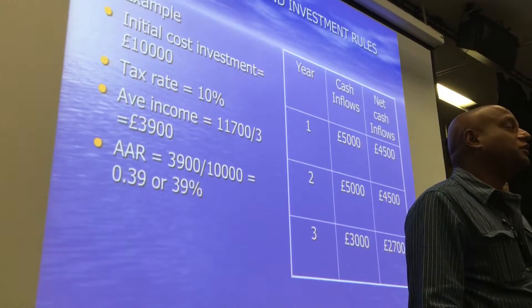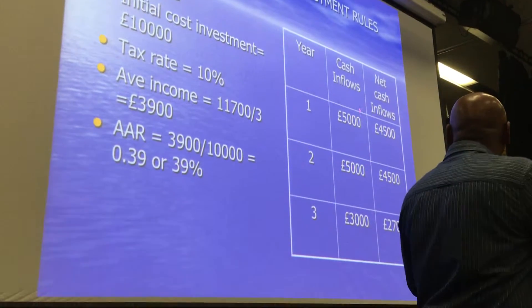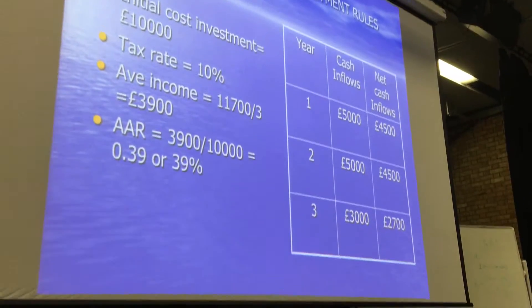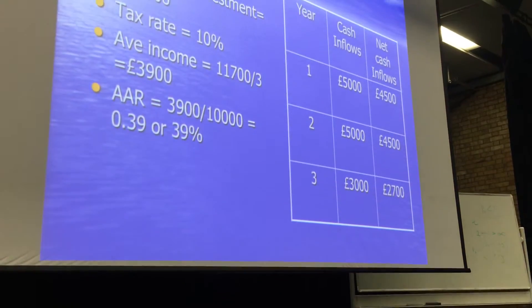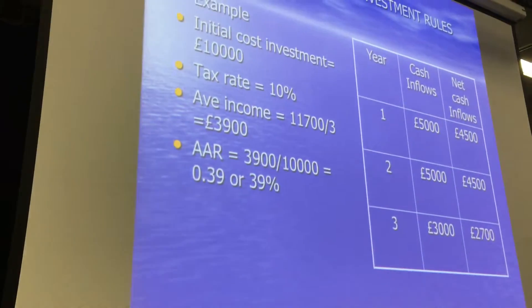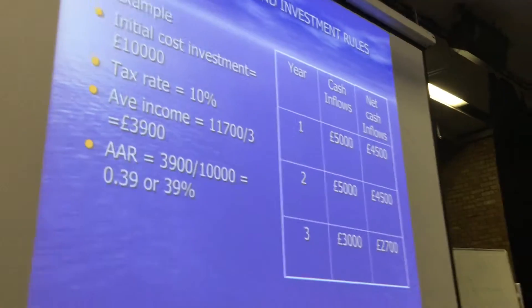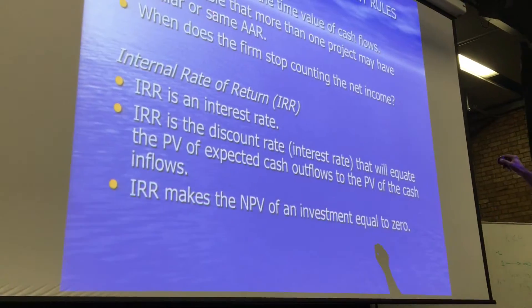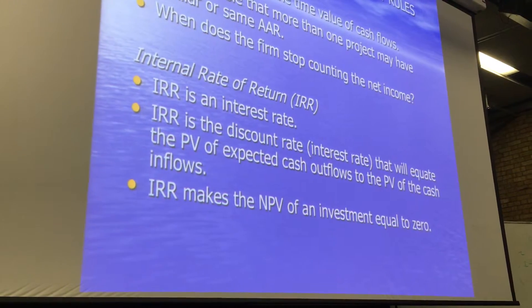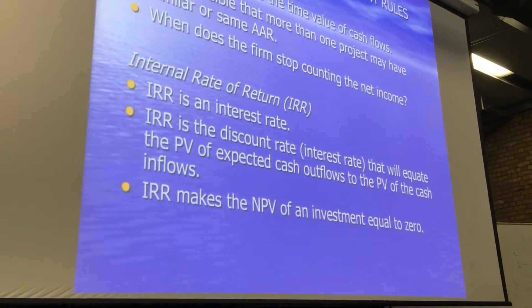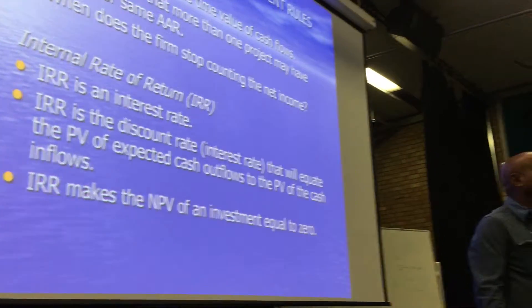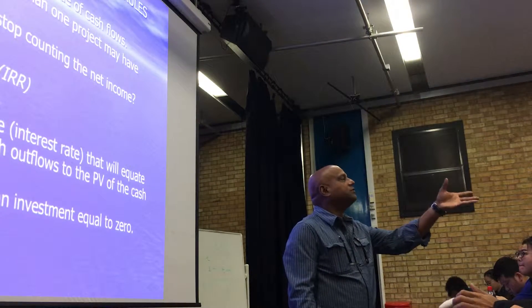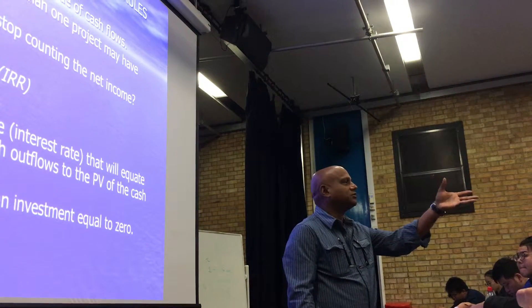Which cash inflow would you change? Would you discount this one or this one? It's always an interesting question, because one of the disadvantages is it doesn't take time and money into account. You read any textbook, they don't give you an example of it. But like payback period, this can be sorted — it can be changed.